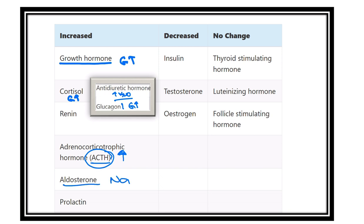Prolactin also increases — it causes lactogenesis and has some growth-promoting function. So prolactin also increases. On the other hand, insulin reduces glucose, but the body does not want to reduce glucose at this time, so insulin is reduced. Testosterone and estrogen also reduce. Thyroid stimulating hormone, luteinizing hormone, and follicle-stimulating hormone are not significantly changed, as they are not very important for the metabolic response to injury.